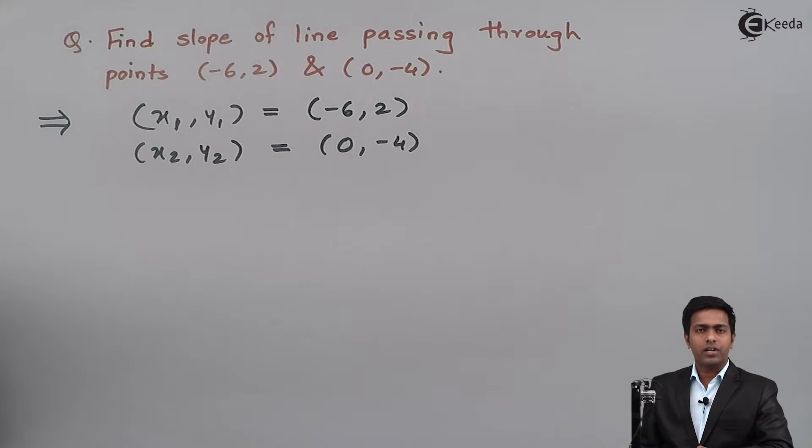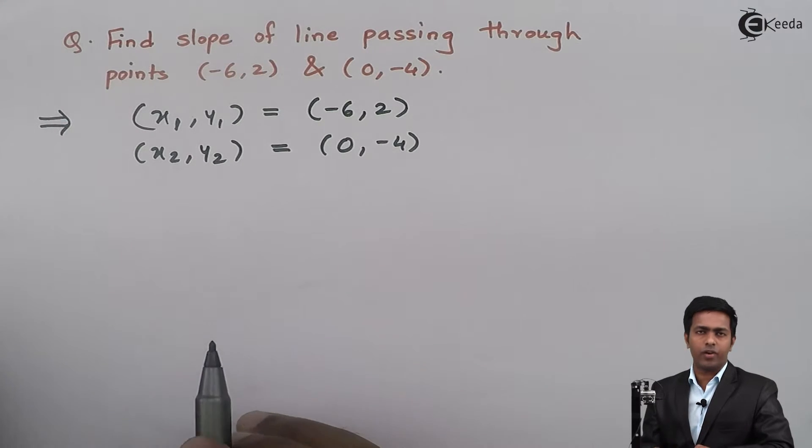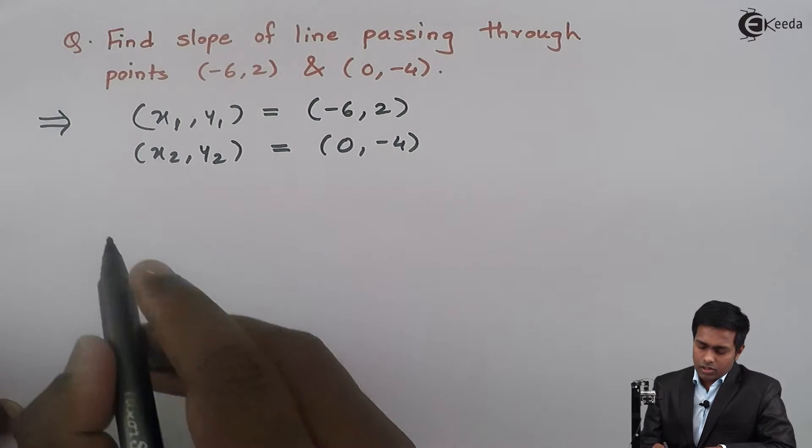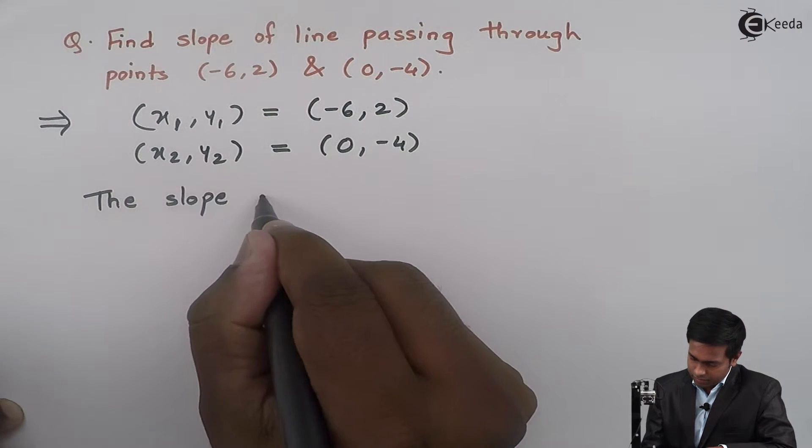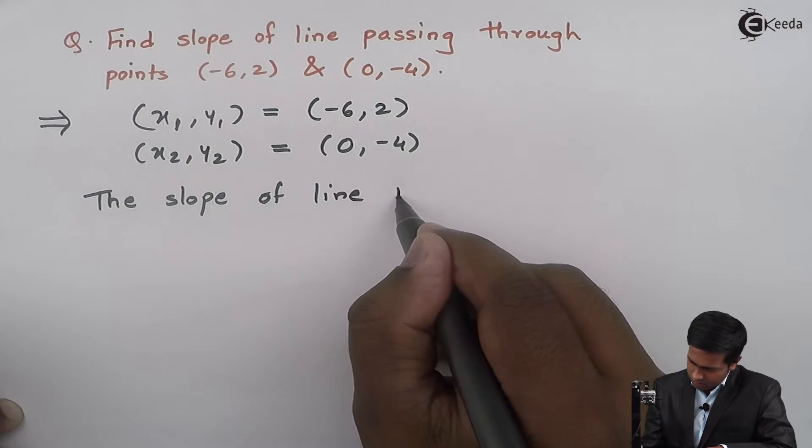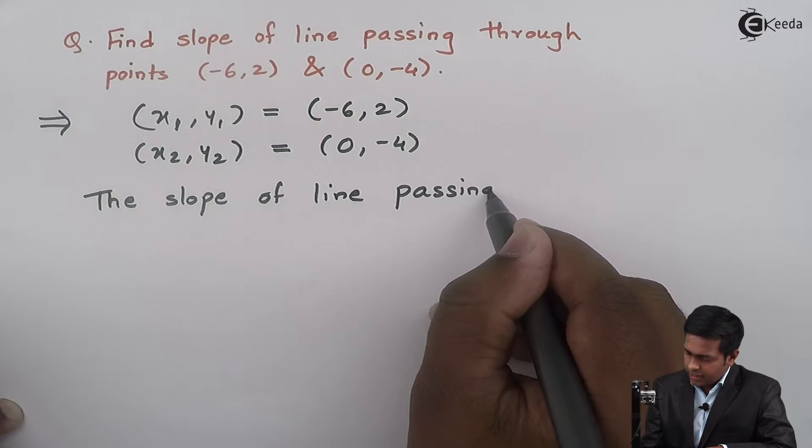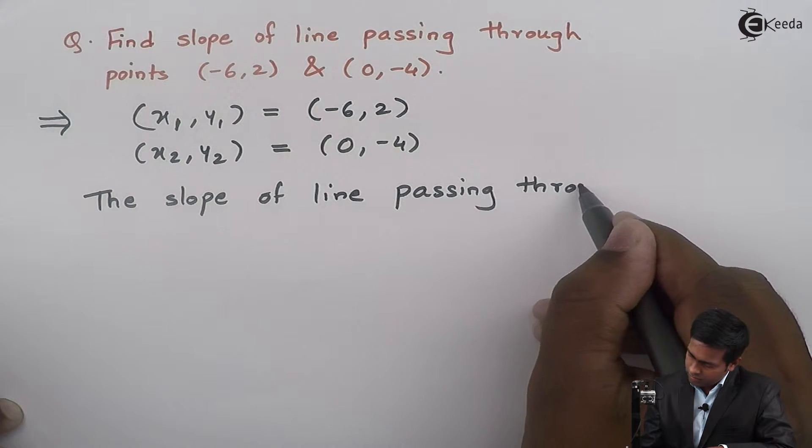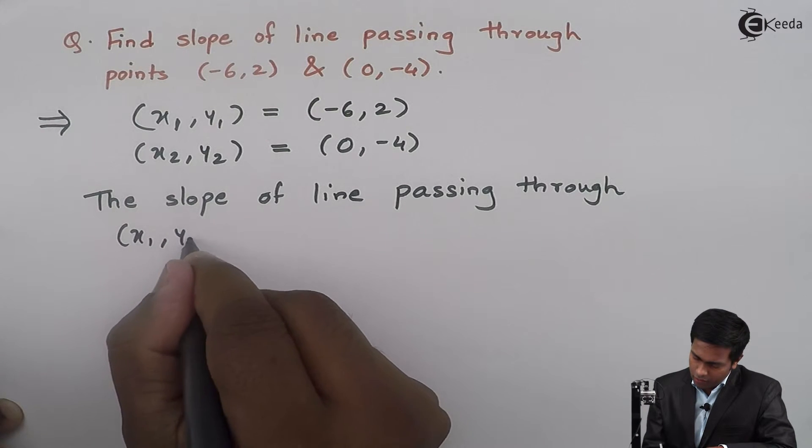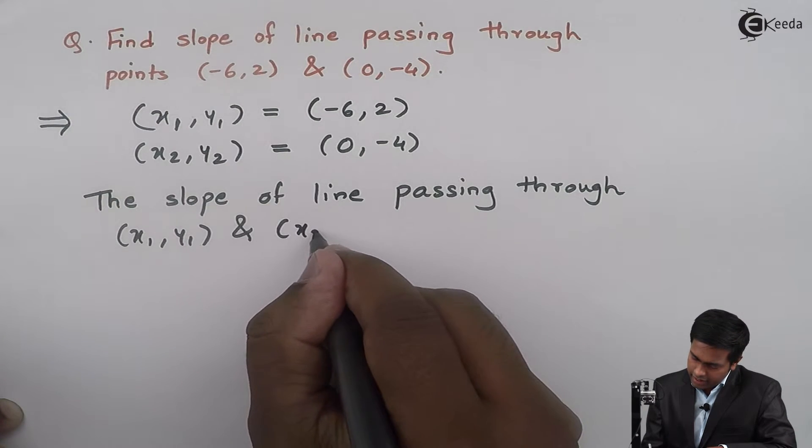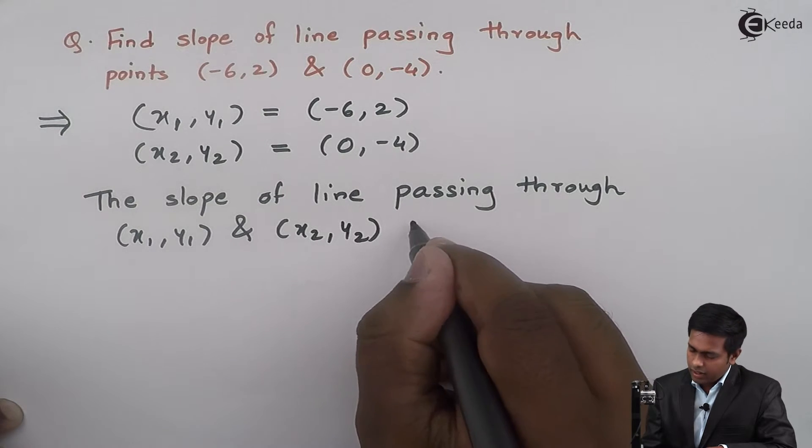Now to find out the slope of line passing through two points, let us say (x₁, y₁) and (x₂, y₂), we have one formula. So the slope of line passing through (x₁, y₁) and (x₂, y₂) is...